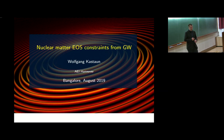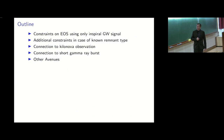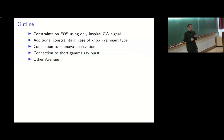A quick outline. I will first speak about what constraints we can get from the inspiral gravitational wave signal alone without any electromagnetic information. Then I will mention what we can learn if we know the type of the outcome. If there's time, I'll briefly talk about connections to kilonovae and short gamma-ray bursts, though that's more a topic for the multi-messenger talk. I'll also cover a few avenues that did not lead to constraints with that detection.